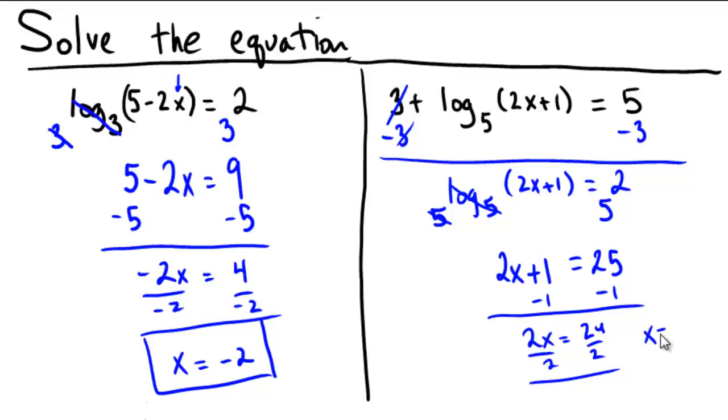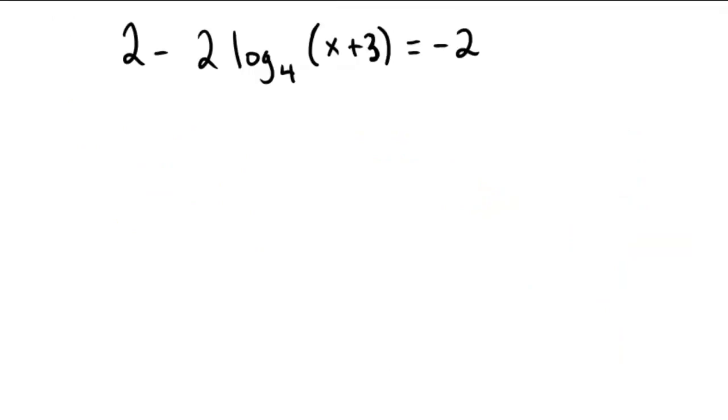Again a quick little check here, 2 times 12 is 24 plus 1 is 25, so the argument would be positive and this is a legal answer. Okay try one on your own then. Here try solving 2 minus 2 times log base 4 of x plus 3 equals negative 2.